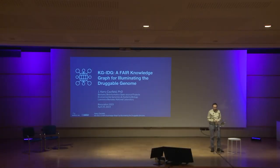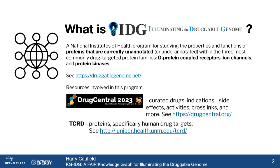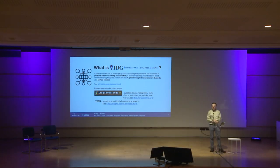Good morning, biocurators and otherwise. I'm going to talk about KGIDG. The IDG in KGIDG stands for Illuminating the Druggable Genome, and that's a NIH program for studying properties and functions of proteins that are currently unannotated, but with some additional focus on what they consider the three most commonly drug-targeted protein families: GPCRs, ion channels, and protein kinases. That still leaves you with a pretty expansive group of proteins, but it does let you focus on some things that may be very good targets for drug repurposing. You can find out more about that program at druggablegenome.net.